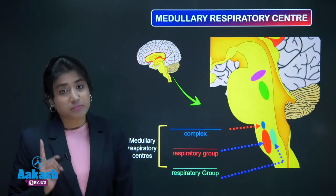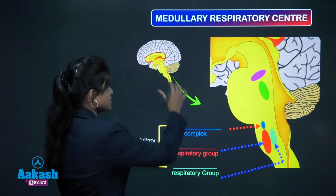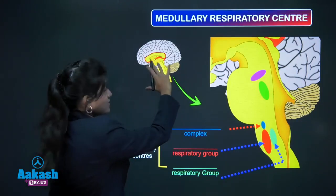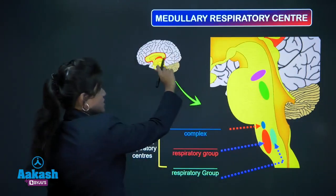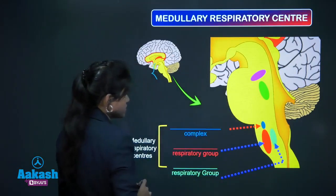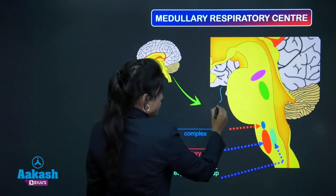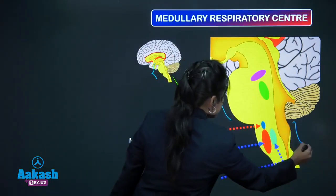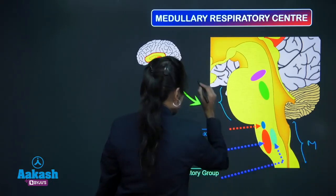Starting with medullary respiratory centers — remember this is your sagittal section again, this is a zoom-in view of this section. This is your pons, and this is your medulla.